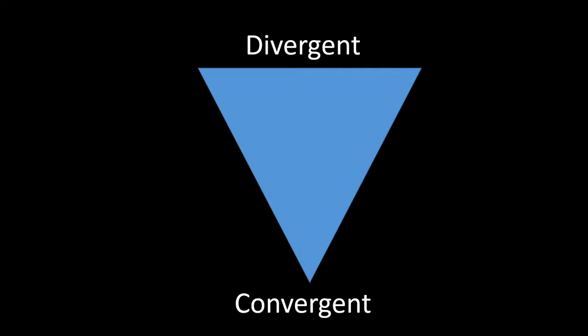Convergence implies that there is a movement towards a singularity of what is possible, but in reality science is an incredibly divergent process.